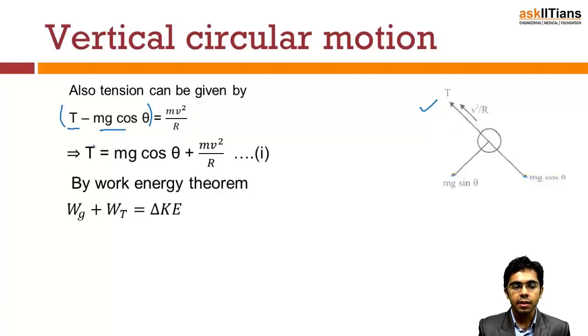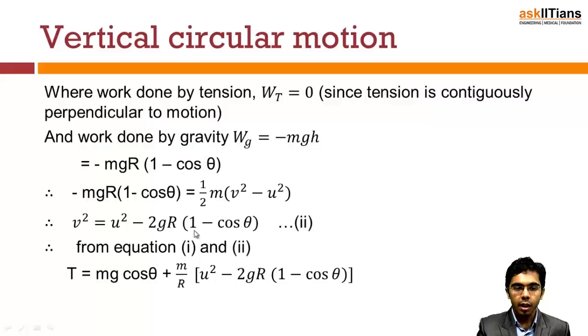Now by work-energy theorem, the net work equals change in kinetic energy. As we can see from the figure, there are only two forces acting: the tension force and the mg force. So we can write work net equals work done by gravity plus work done by tension. This equals the change in kinetic energy.